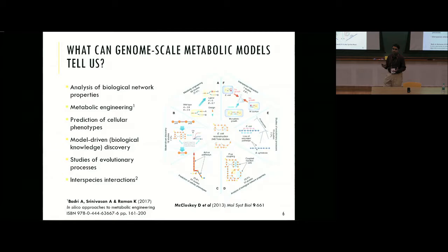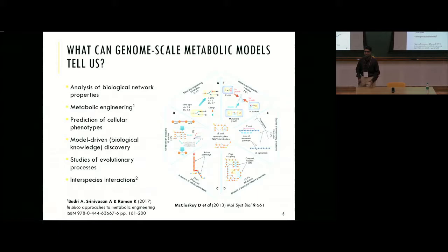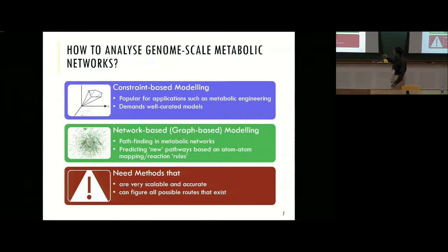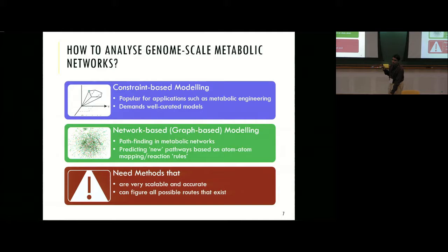I'm not going to talk about constraint-based modeling today for a change — there's too much of a record of me talking about it at ICTS. Constraint-based modeling is popular for applications in metabolic engineering, but it demands well-curated models and relies on stoichiometry. If you have a slightly messy model, you're going to have bad conclusions. On the other hand, there are network-based methods — many look at path-finding in metabolic networks, literally Google Maps within the cell, and others predict new pathways.